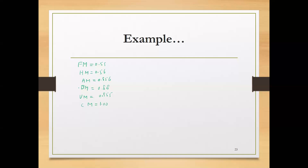Starting with the lowest multiplier — FM, the frequency multiplier — its value can be improved by reducing the duration of the task or reducing the lift frequency itself. However, reducing frequency may impact productivity and has practical implications, so we move to the next multiplier.